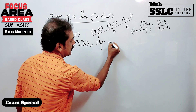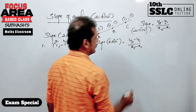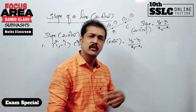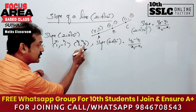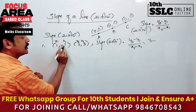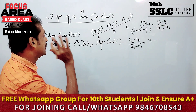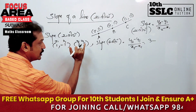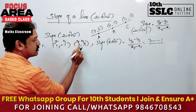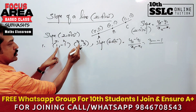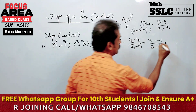The slope is equal to the formula y2 minus y1 by x2 minus x1. That is: 3 minus (-1) by 2 minus 1, which is 3 plus 1 equals 4, divided by 1. The answer is 4.